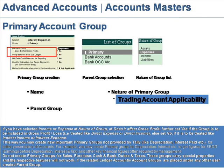This way you may create new important primary groups not provided by Tally, like Depreciation, Interest Paid, etc., for better presentation of accounts. For example, you may create primary groups for Depreciation, Interest, etc., to get figures like EBDIT — that is, Earnings Before Depreciation, Interest and Tax — and other key financial figures often required by management.